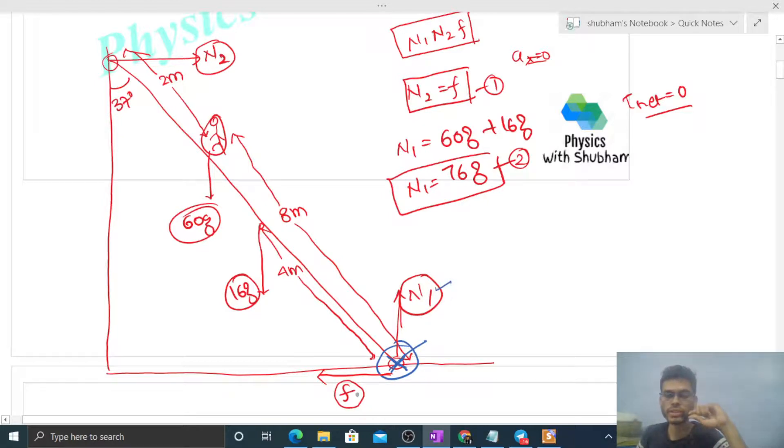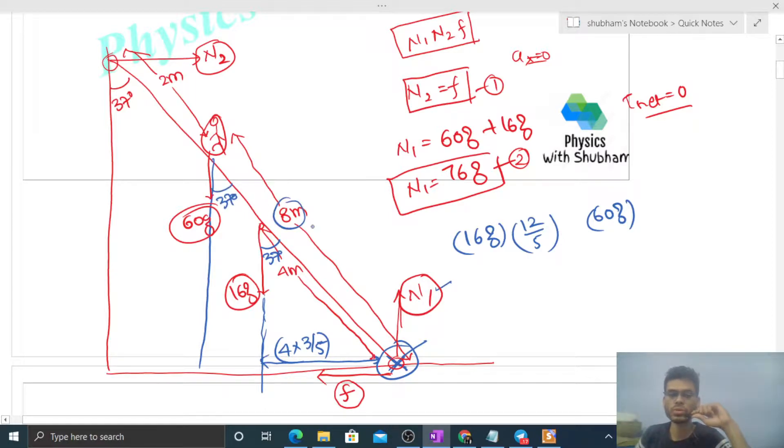So net torque - N1 and friction force torque will be zero because both pass through this axis. 16G and 60G, what will be the torque of these two? The torque of 16G will be 16G force times its lever arm. Lever arm is the perpendicular distance of line of action. So the perpendicular distance is this. This angle will also be 37 degree. So 4 sin 37. 4 into sin 37 is 3 by 5. So this becomes 12 by 5. So multiply by 12 by 5. Similarly 60G into its lever arm. Check the lever arm. This is 8 and this angle is again 37 degree. So 8 sin 37, 8 into 3 by 5. So 24 by 5.